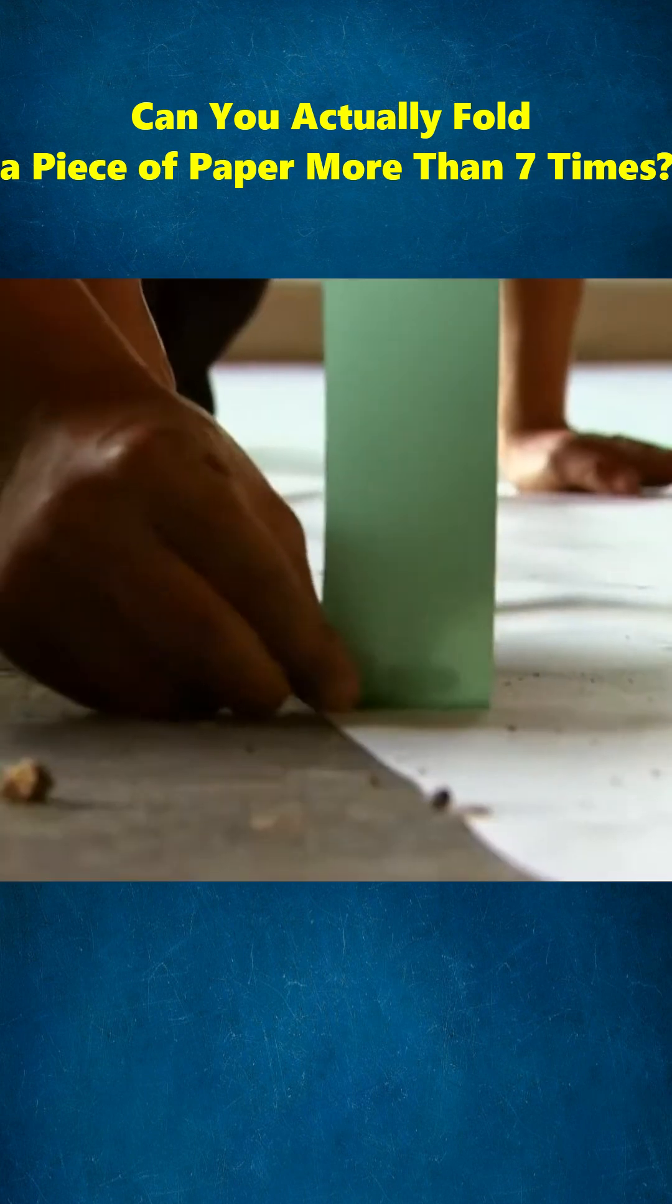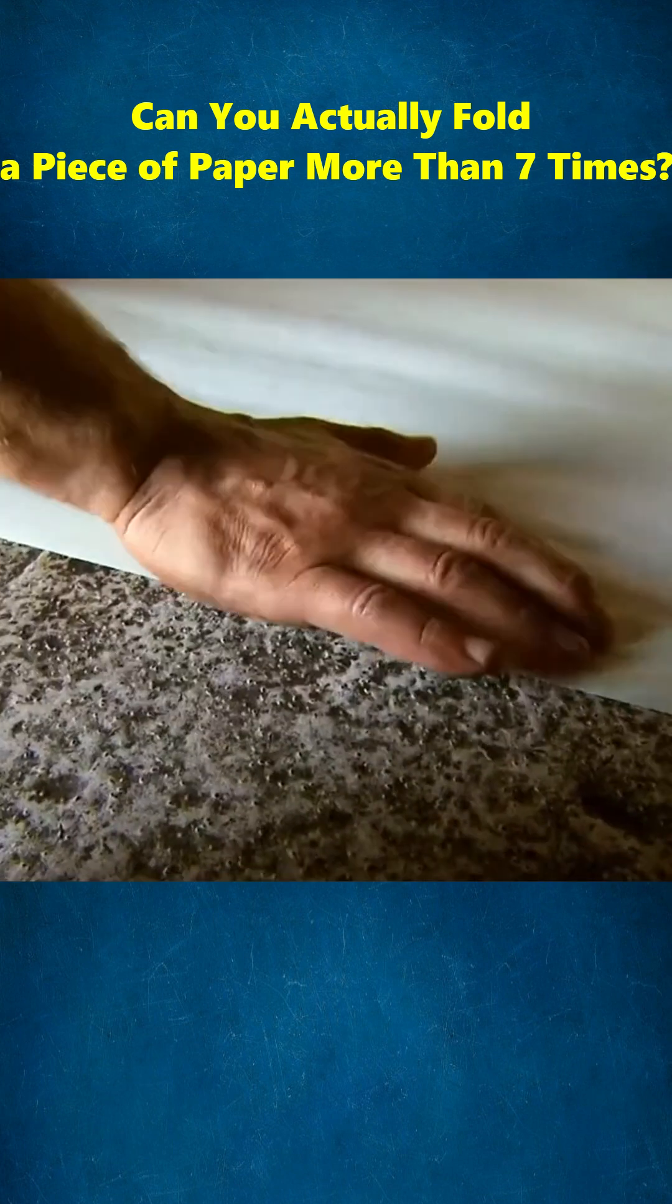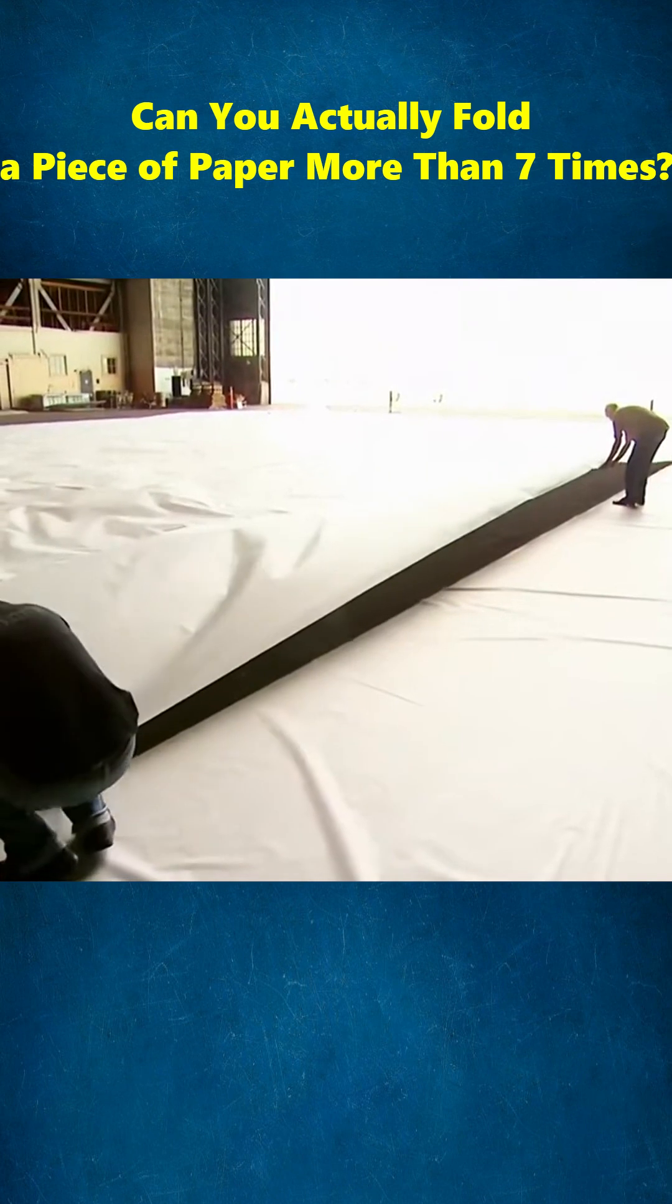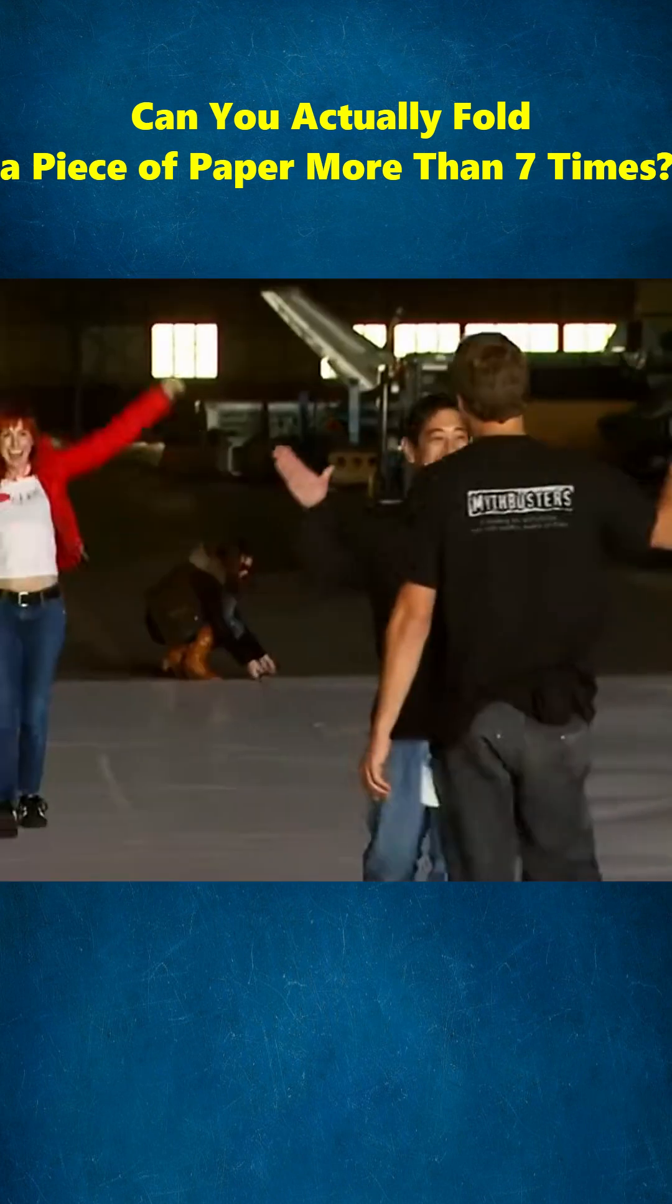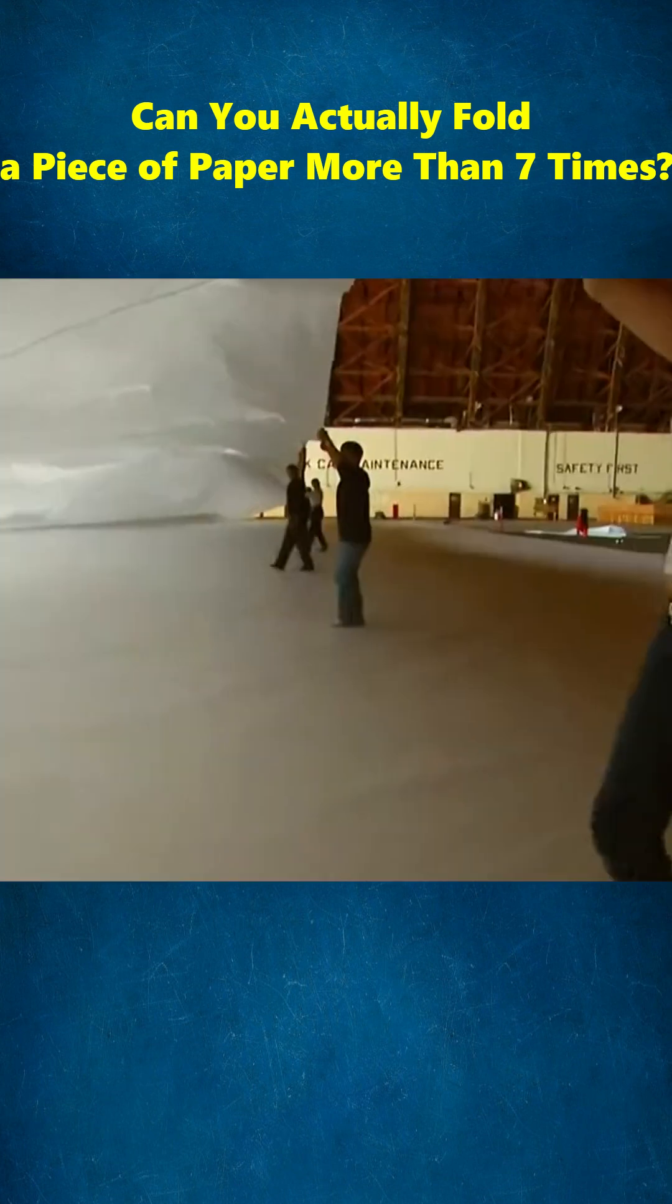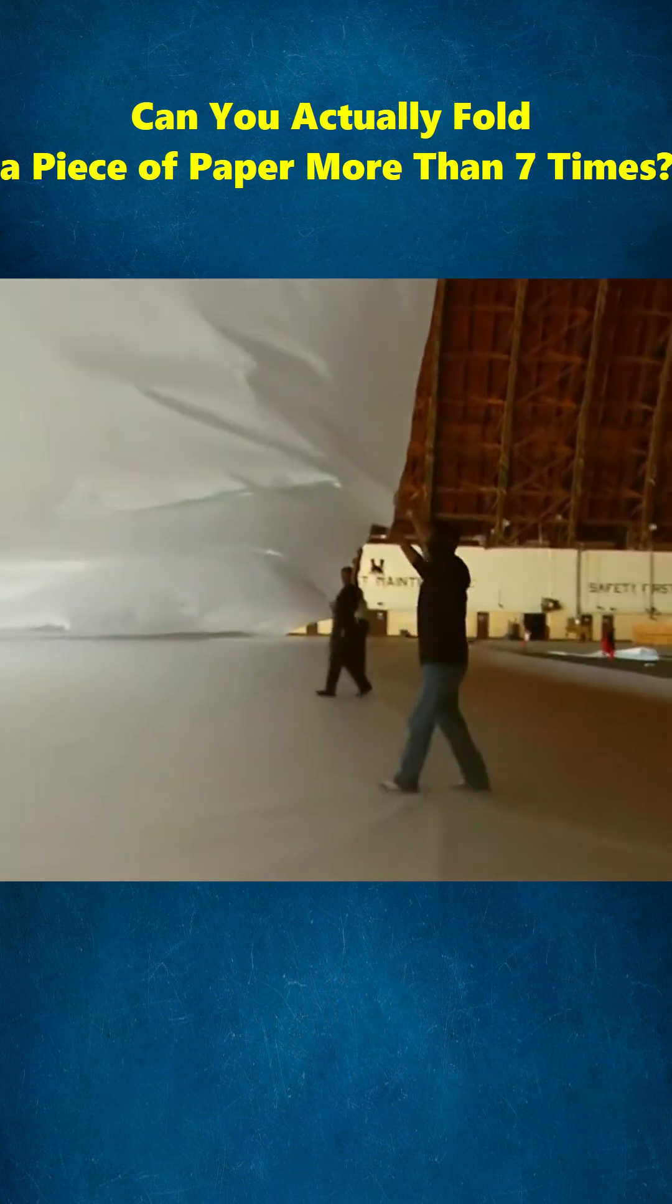Then we bought the thinnest paper we could find on the market. We unrolled the first roll, but it still wasn't big enough. So we used double-sided tape to stick all the edges together. After 17 rolls, BAM! We had the world's biggest piece of paper.